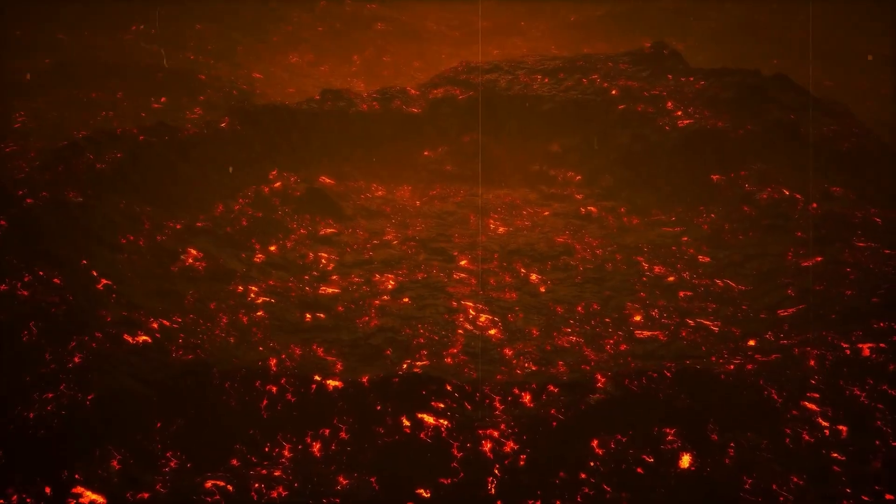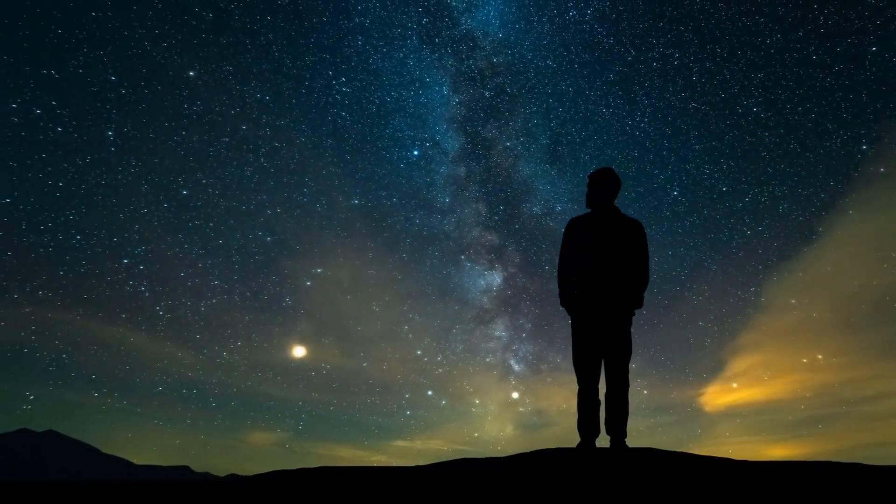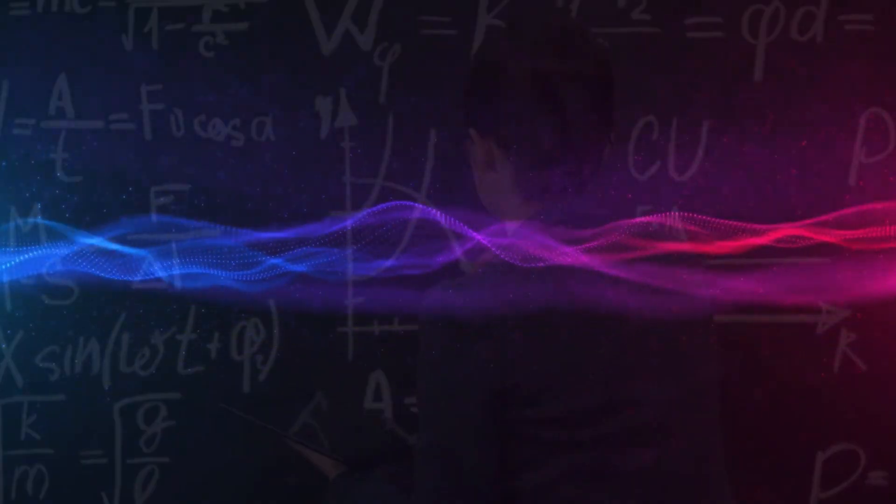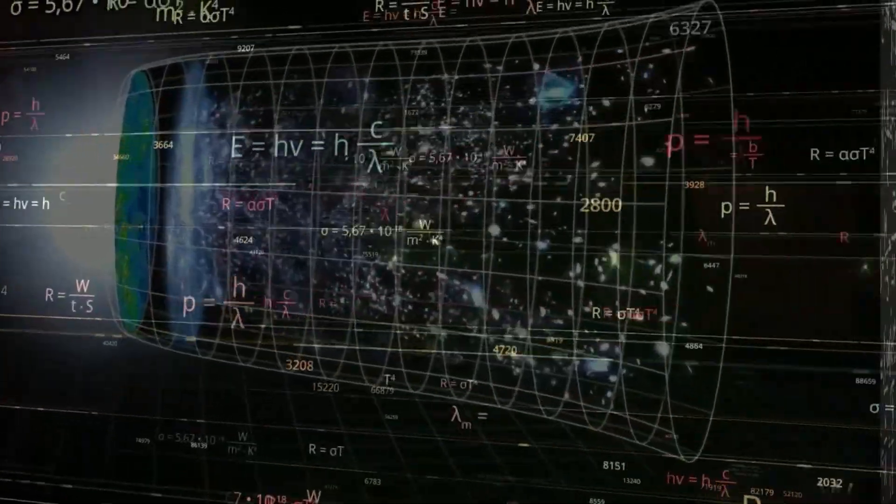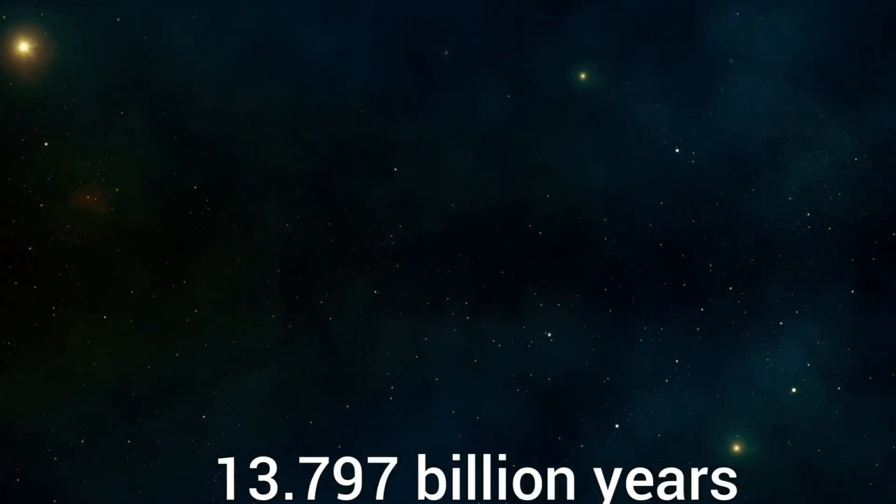Kepler-70b also has a neighboring planet, Kepler-70c, which is also very close to the star and has an orbital period of about 8.52 hours. Presumably, the growing star literally attracts its planets and then slowly burns them up.